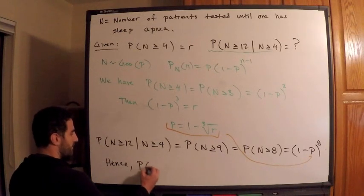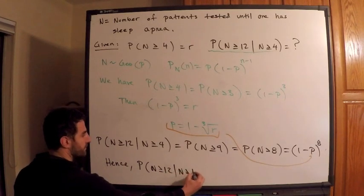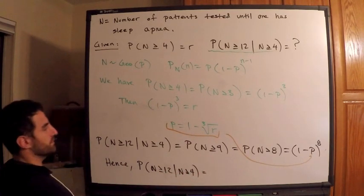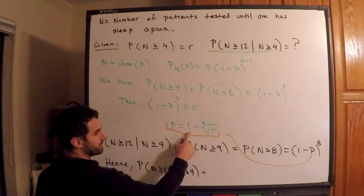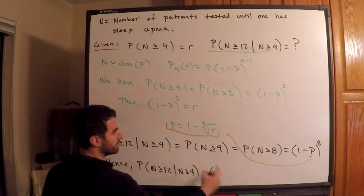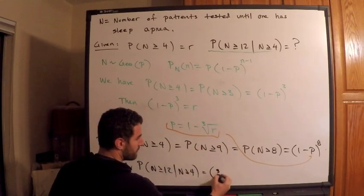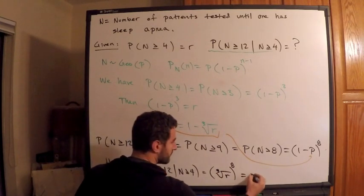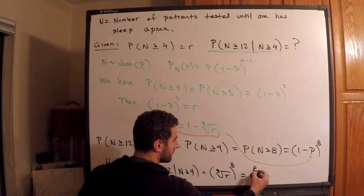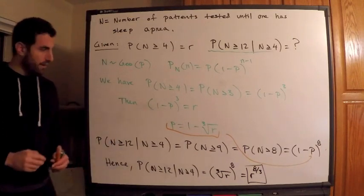We have this probability N greater than or equal to 12 given N greater than or equal to 4 is equal to, replace p. Right, 1 minus, and I have this one, so this is going to be equal to if I substitute, this is going to be the cube root of r raised to the 8th power, which is equal to r to the 8 thirds.